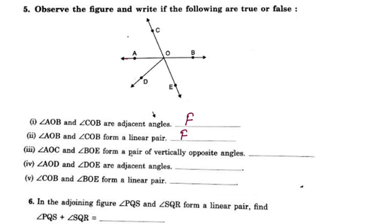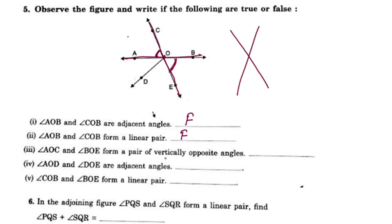Angle AOC and angle BOE form a pair of vertically opposite angles. Angle AOC is this angle and BOE is its vertically opposite angle. So this statement is true.